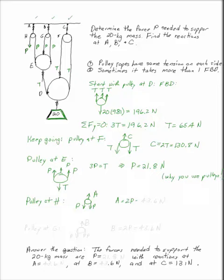The pulley at G gives the last bit of information. You wanted to know P and the reactions at the ceiling. The reaction at the third ceiling point, B, is also 2P, or 43.6 Newtons.